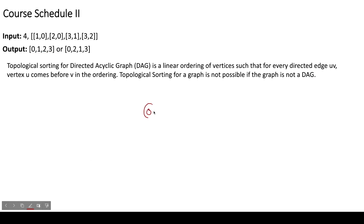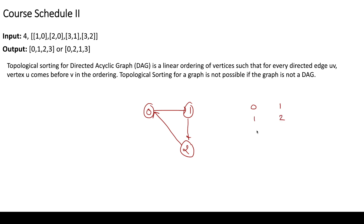Consider a simple graph with nodes 0, 1, and 2 forming a cycle: edges 0→1, 1→2, and 2→0. According to topological sort, we need 0 before 1, 1 before 2, and 2 before 0 — but this is a cyclic ordering and is not possible. If zero comes before one and one before two, two cannot come before zero. In this case we must return an empty array.